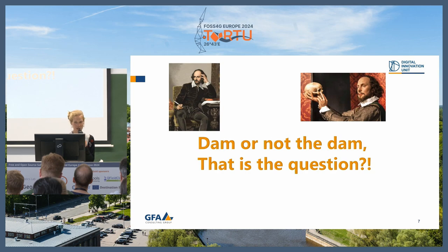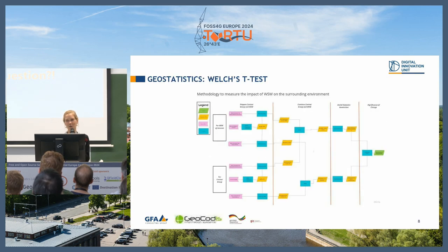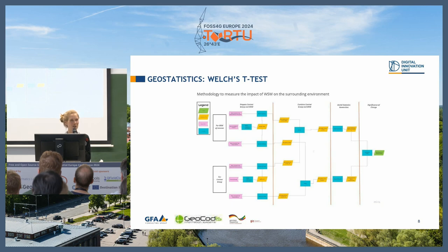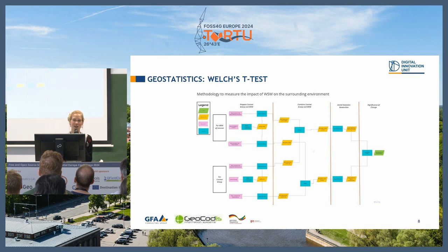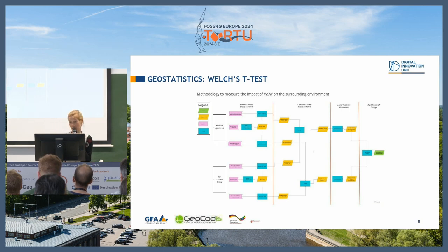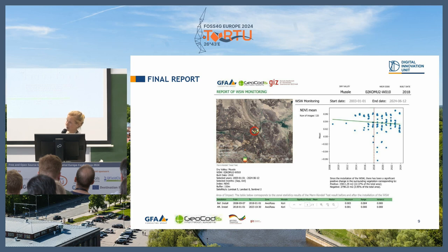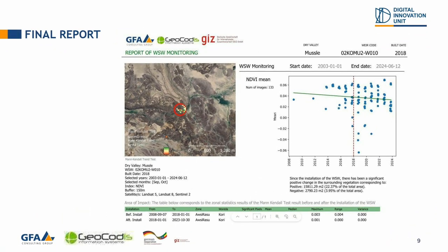And of course we needed to ask the question: dam or not — that is the question, like Shakespeare already did. So we came up with a nice geostatistical approach which also takes into consideration some control points using the Welch T-test. At the end we get a final report that the user can use, where you can see whether there has been some positive improvement around the dam structure or not.